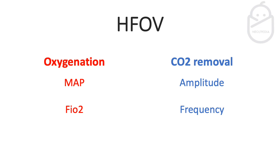For CO2 removal, this is controlled by two things: amplitude and frequency. Amplitude works like the ventilator rate in conventional ventilation — if you have hypercarbia (high CO2), increase the amplitude to remove CO2; if CO2 is low, wean the amplitude down. Frequency is fixed at 10 and should not be changed unless instructed by a senior colleague such as the consultant.